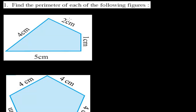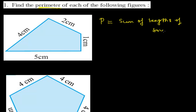Welcome once again. In the previous video we learned the concept of perimeter — what is perimeter and how to find out the perimeter of different objects. Sometimes we took examples of regular figures and sometimes irregular figures, but overall what we understood is that perimeter is nothing more than the sum of the length of all boundaries.